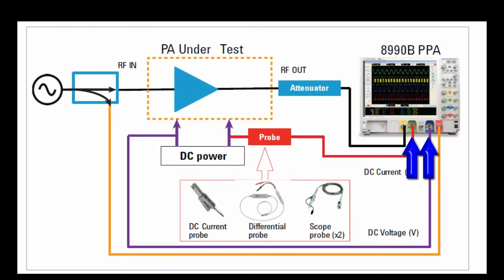The 8990B's analog channel 2 and 3 are used to measure the DC power channeled into the power amplifier. The DC power consists of voltage and current supply to the power amplifier.